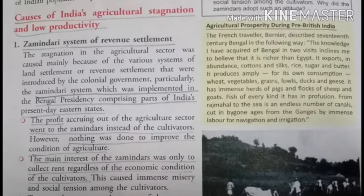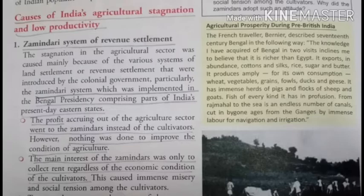We have the causes of India's agriculture stagnation under low productivity — yani krishi mein jo rukaawat thi aur jo low productivity thi, uske kya karan the. The first cause is the zamindari system of revenue settlement. Revenue yani kar chukane ke liye jo system tha, wo zamindari system tha.